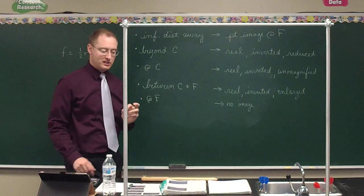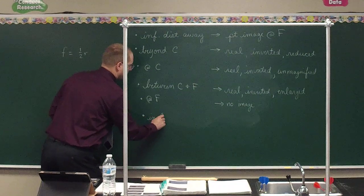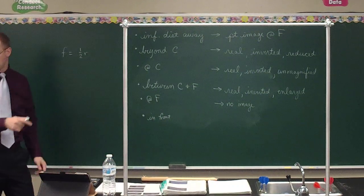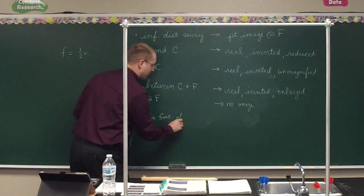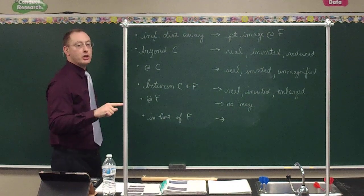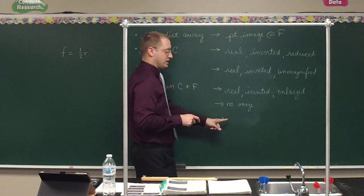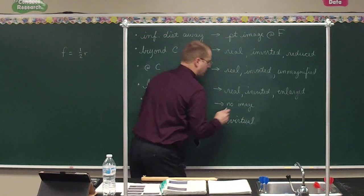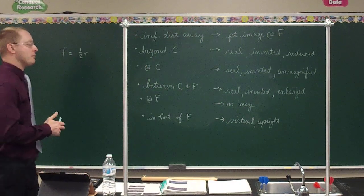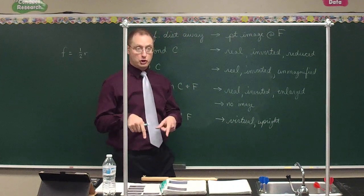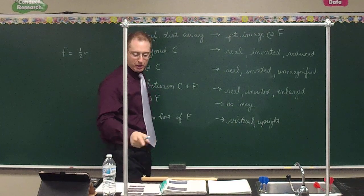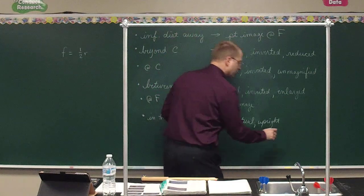Then something unusual happens. As soon as you get in front of F — case 6 — you can't get bigger than infinitely large, so you lose the real image completely. You switch from real images to a virtual image. Virtual images are always upright, just as real images are always inverted. This is the case we did for our first ray diagram today — the image forms behind the mirror and it's enlarged.